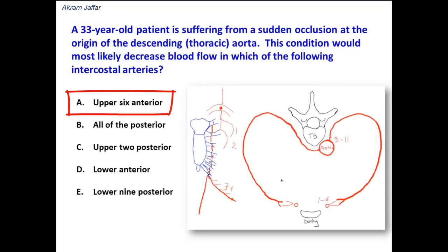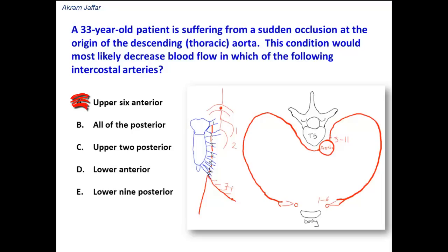The first option is the upper six anterior intercostal arteries. As you can see here in this diagram, the upper six anterior intercostal arteries are actually branches of the internal thoracic artery, so they are not derived from the descending thoracic aorta, because the internal thoracic artery is a branch of the subclavian artery.